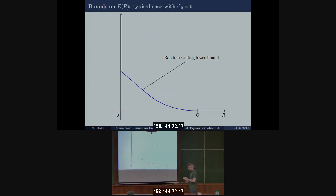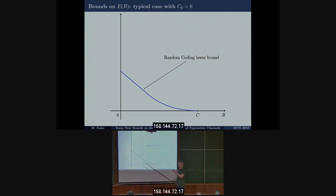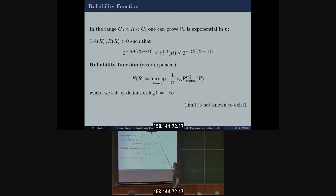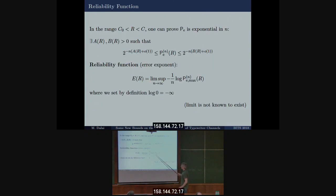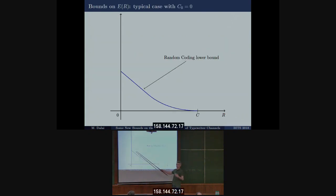For a typical case with zero-error capacity equal to zero — like the binary symmetric channel — there is a random coding lower bound on the reliability function, which is the simplest such bound. Keep in mind: an upper bound on the probability of error gives a lower bound on the exponent. So a lower bound on the reliability function is an upper bound on the probability of error.